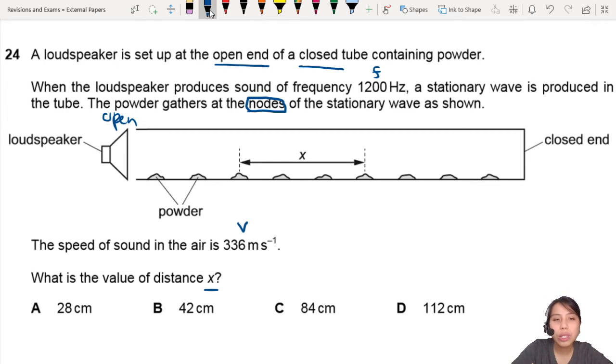So we do know that these are nodes. I'm gonna draw some dotted lines for you to show what the nodes are. If you want to draw the stationary wave, how would you draw it if you had all these nodes?